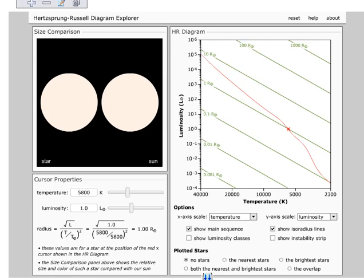This is a diagram used by astronomers to learn a lot about stars. What we do is we take stars and measure how bright they are, their magnitude, and we measure their temperature. And then what we do is we put the stars on a diagram that looks something like this.